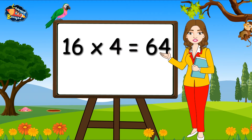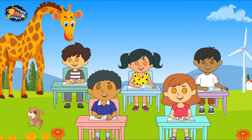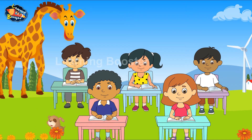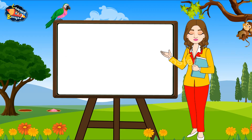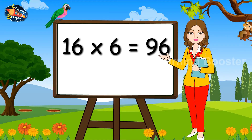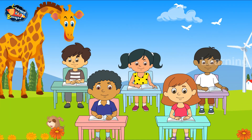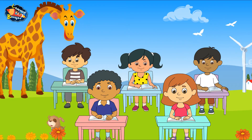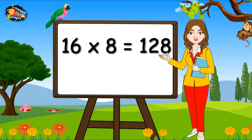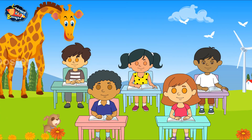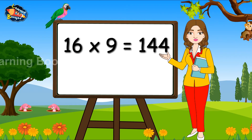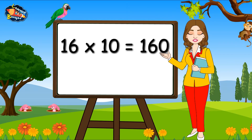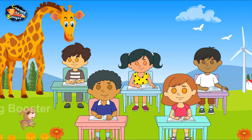16 4s are 64. 16 5s are 80. 16 6s are 96. 16 7s are 112. 16 8s are 128. 16 9s are 144. 16 10s are 160.